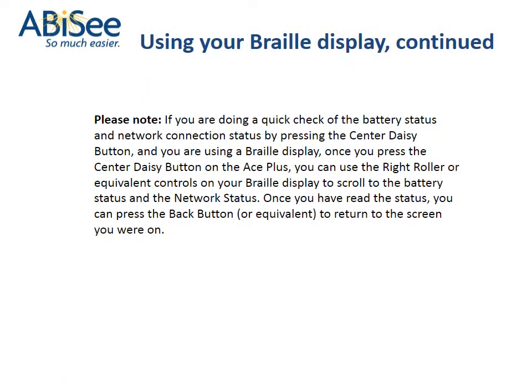Please note: if you are doing a quick check of the battery status and network connection status by pressing the center daisy button, and you are using a Braille display, once you press the center daisy button on the Ace Plus, you can use the right roller or equivalent controls on your Braille display to scroll to the battery status and the network status. Once you have read the status, you can press the back button, or equivalent, to return to the screen you were on.